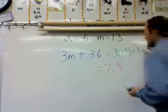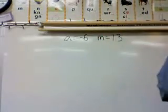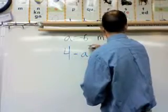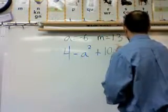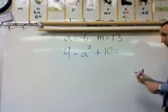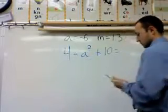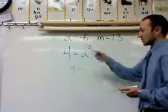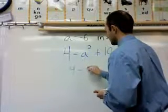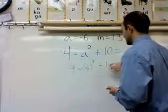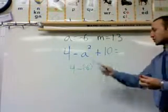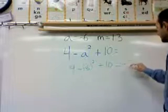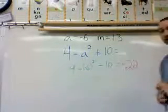Let's look at one final equation where we're going to have to use order of operations. It's going to be 4 minus A squared plus 10. So now I want to rewrite it, taking the letters out and replacing them with numbers. I have 4 minus — remember A was negative 6 — so it's going to be negative 6 squared plus 10. Thinking back to order of operations, I need to handle the exponent first: 4 minus 36 plus 10. Working all that out, I come up with an answer of negative 22.